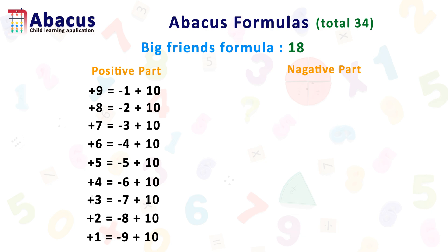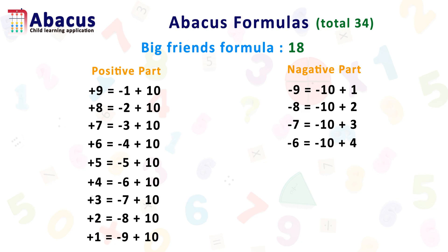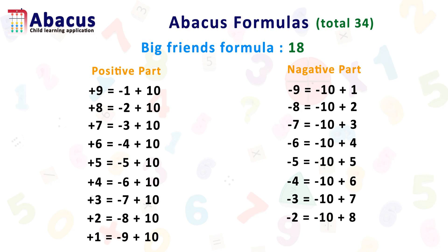The negative part of big friend formulas are: minus 9 equals minus 10 plus 1; minus 8 equals minus 10 plus 2; minus 7 equals minus 10 plus 3; minus 6 equals minus 10 plus 4; minus 5 equals minus 10 plus 5; minus 4 equals minus 10 plus 6; minus 3 equals minus 10 plus 7; minus 2 equals minus 10 plus 8; minus 1 equals minus 10 plus 9.